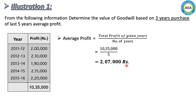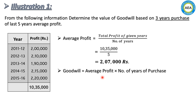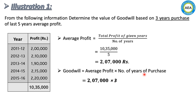Now we find goodwill using the formula: Goodwill = Average Profit × Number of Years of Purchase = ₹2,07,000 × 3 = ₹6,21,000. So this is the simple average profit method.